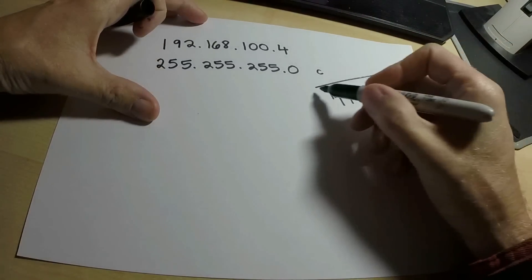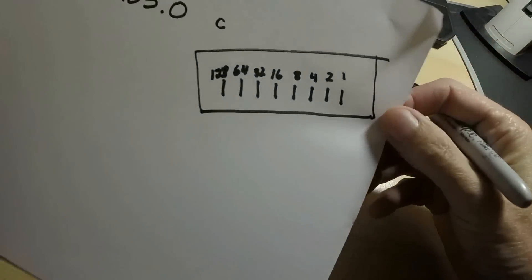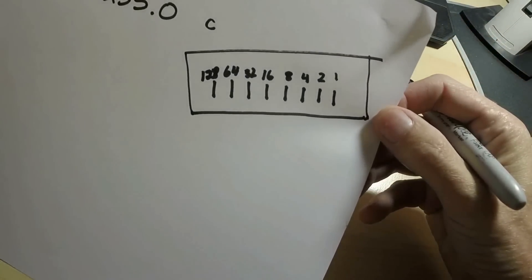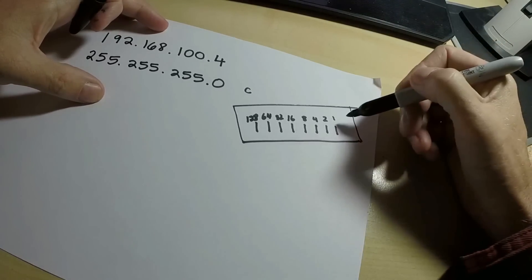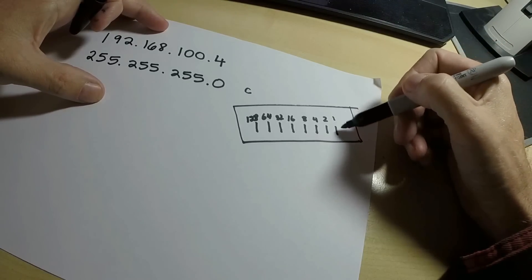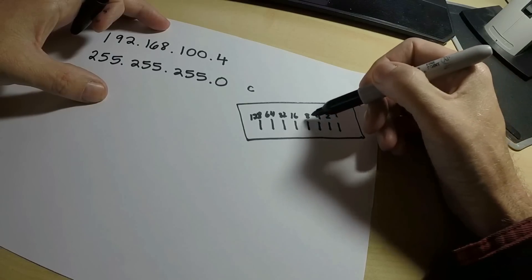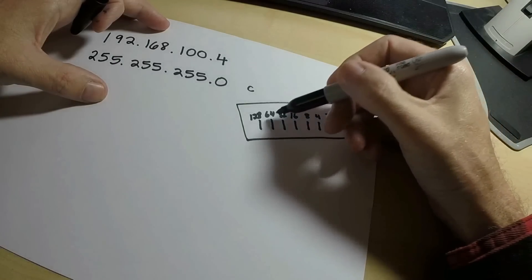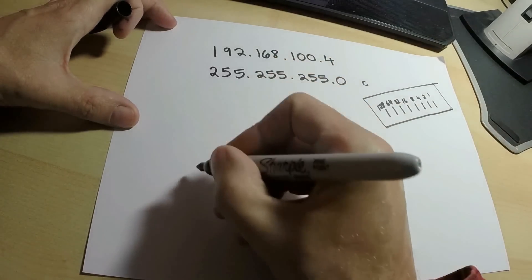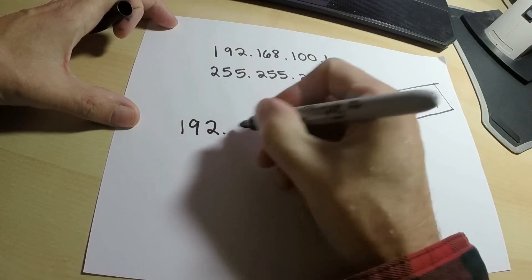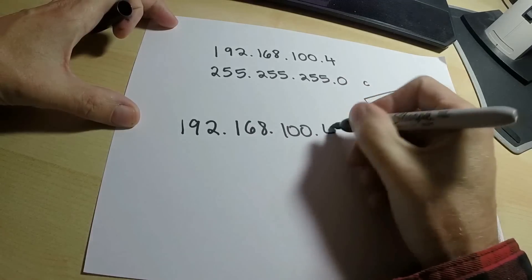The first thing to think about is that each octet of the IP in binary is going to be 8 bits, and you can see the numbers here — each bit counts as a certain value. It starts from the right side with a 1, and it doubles all the way up: 2, 4, 8, 16, 32, 64, 128. Given that in mind, we are going to create the binary view of these numbers.